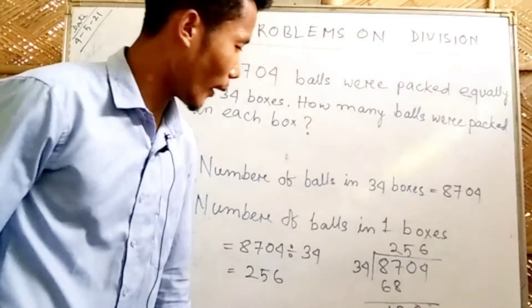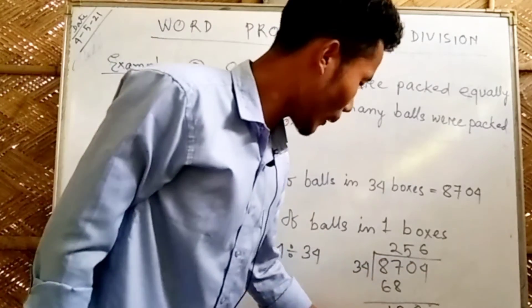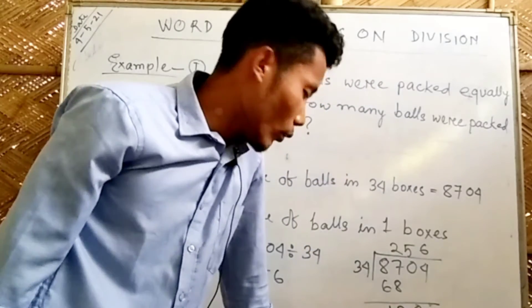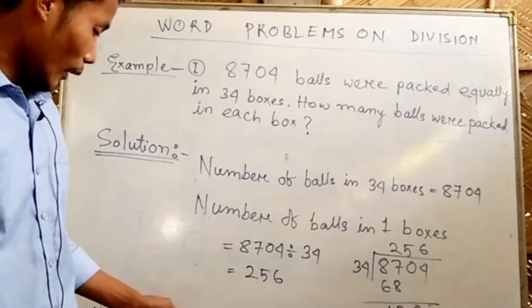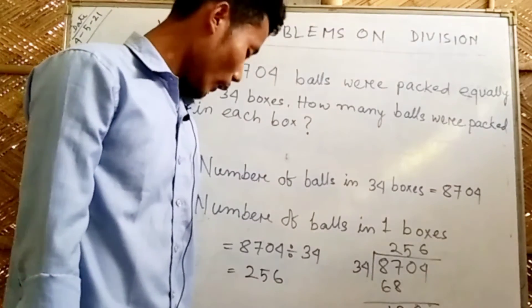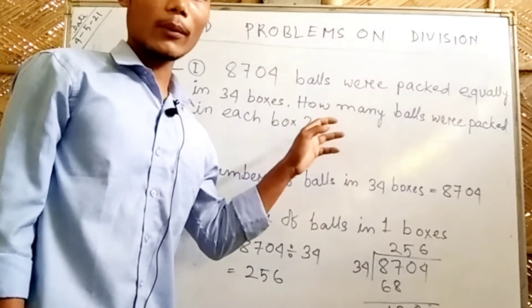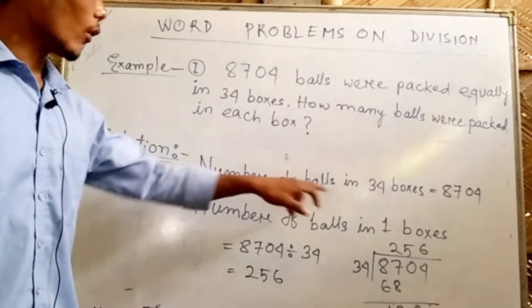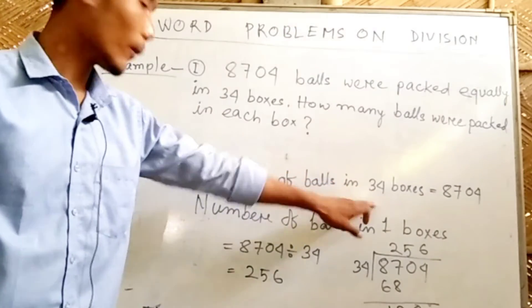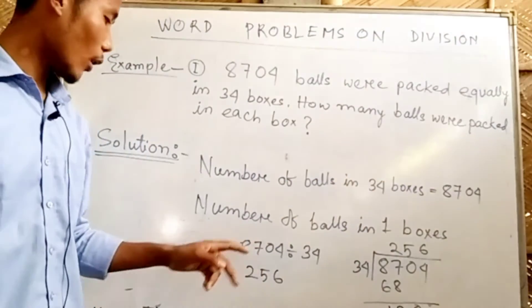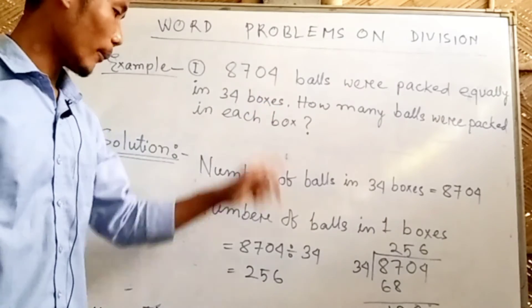So we divide 8700 by 34. Working through the long division: 34 into 87 goes twice, giving 170; bringing down digits and continuing the division steps through 170, then 630, giving a result of 256 balls.